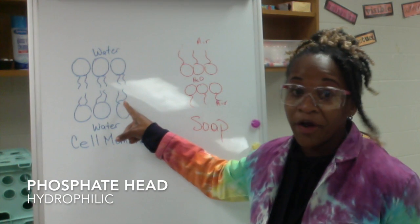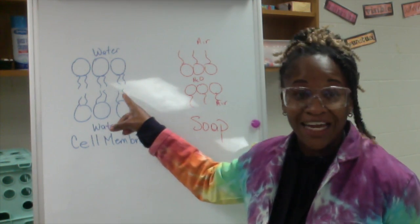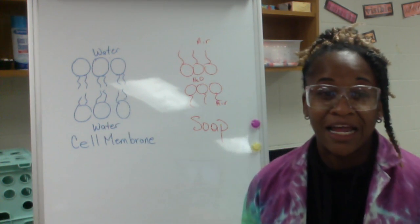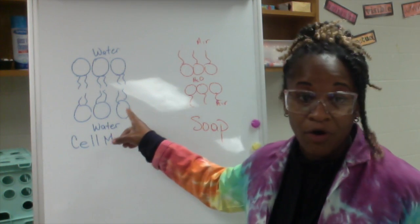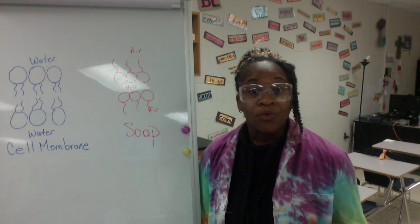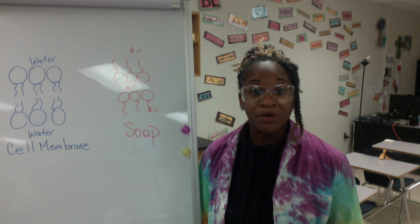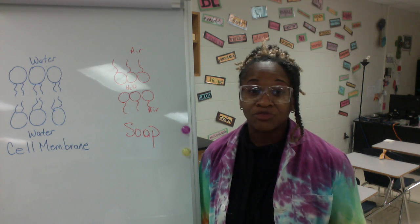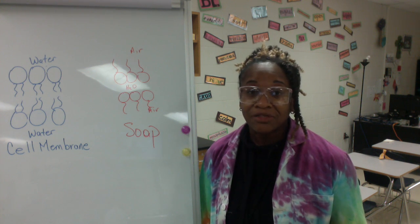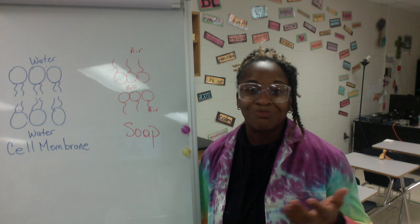A phospholipid has a phosphate water-loving head with two fatty acid tails that are hydrophobic. I like to say that the heads love water while the tails are haters — they hide from the water. When it comes to soap, it is the opposite: the heads face the middle because the hydrophilic heads are attracted to the water in the middle layer, and the tails face the outside.